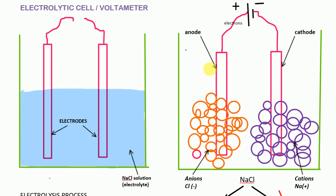This positively charged electrode is known as the anode, and this negatively charged electrode is known as the cathode.